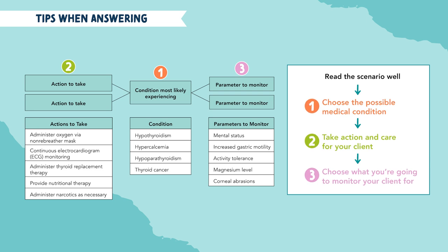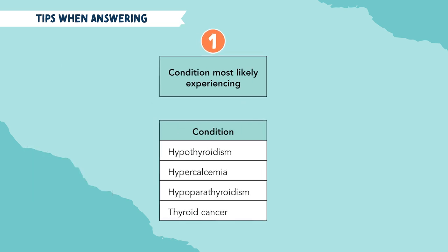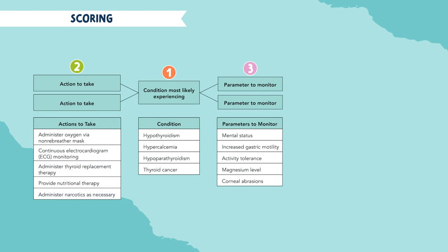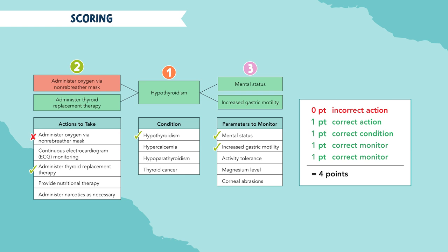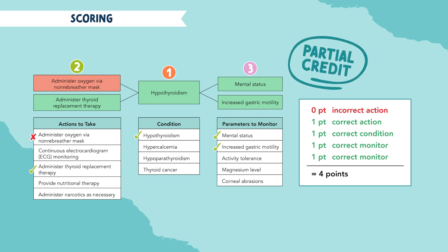If you're unsure about the condition, you can use the process of elimination — you know that one of four conditions given is correct. Bowtie questions are scored with 0-1 scoring, meaning you receive one point for every correct answer and zero points for incorrect answers. Incorrect answers don't count against you. Bowtie questions have five potential points you can earn, partial credit does apply, so keep that in mind. Remember that answering a Bowtie question has multiple steps — take each column one by one.